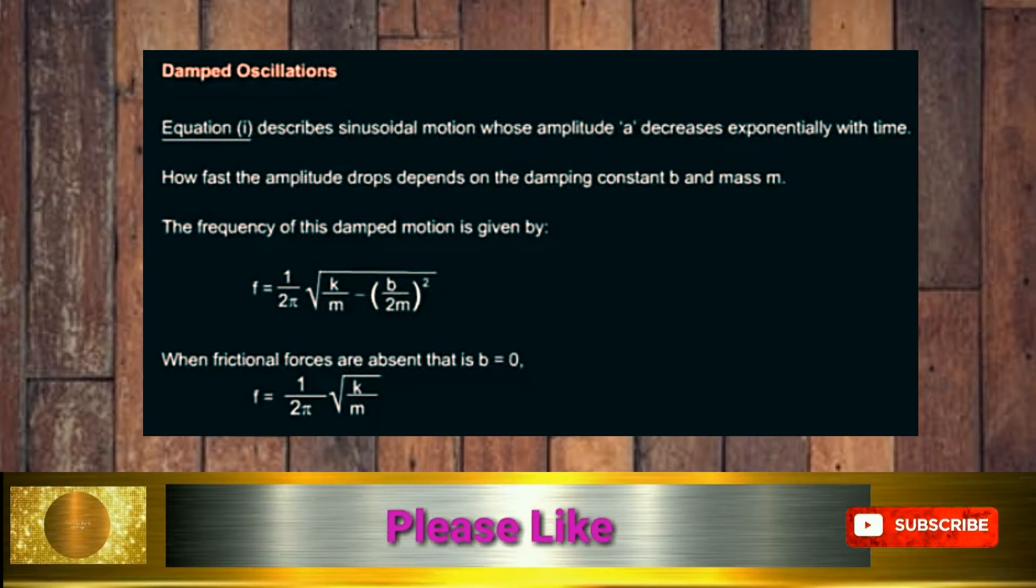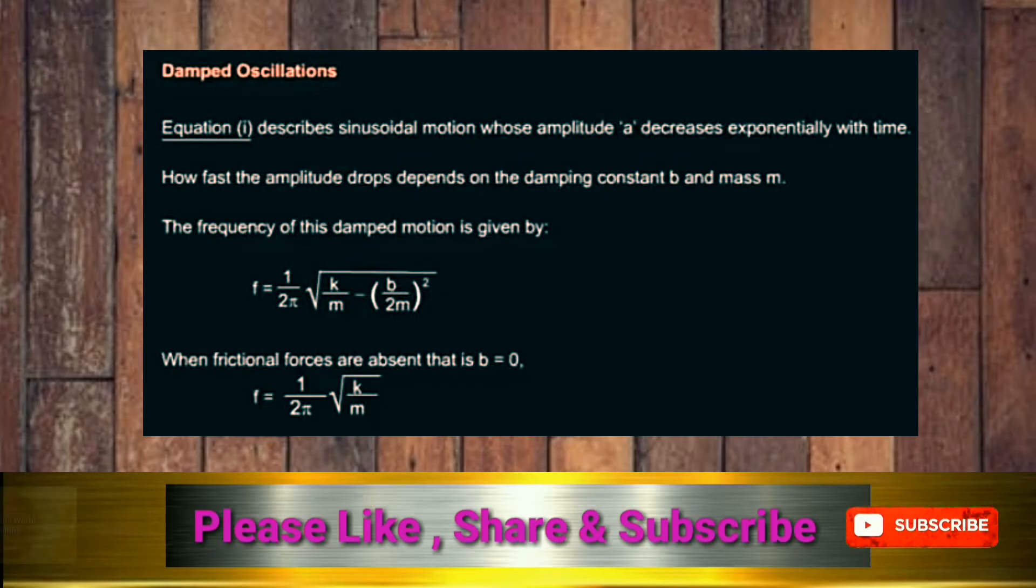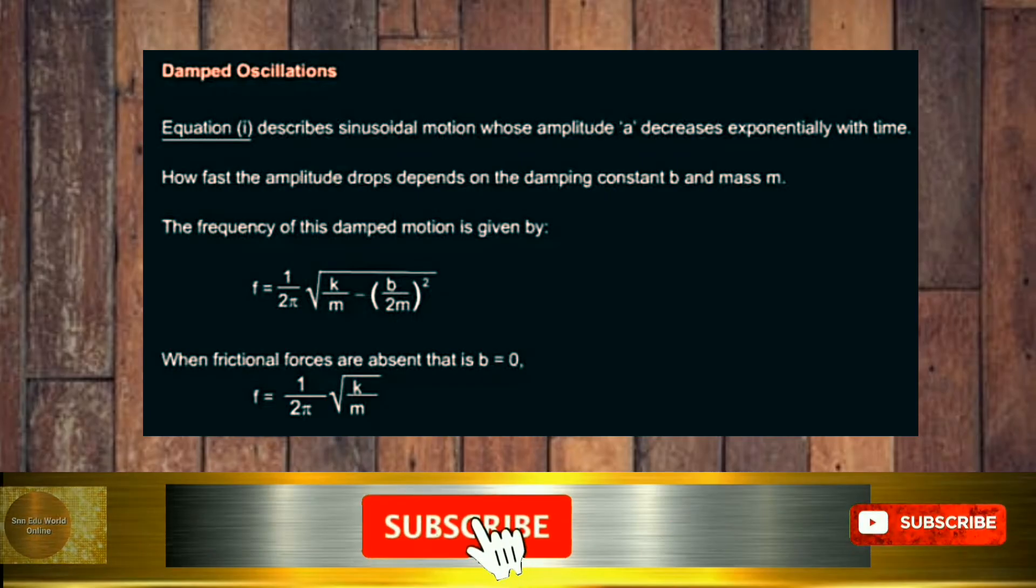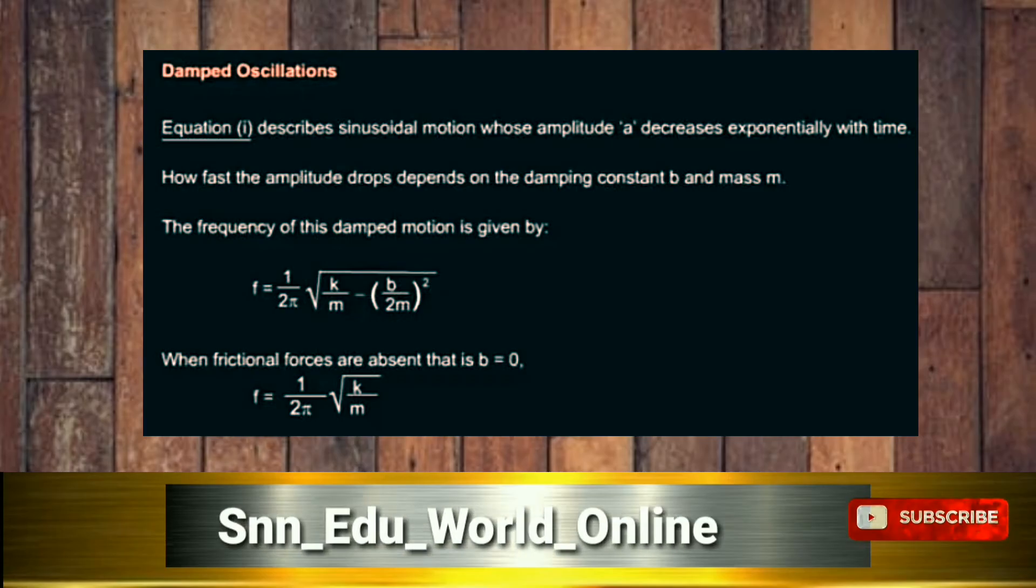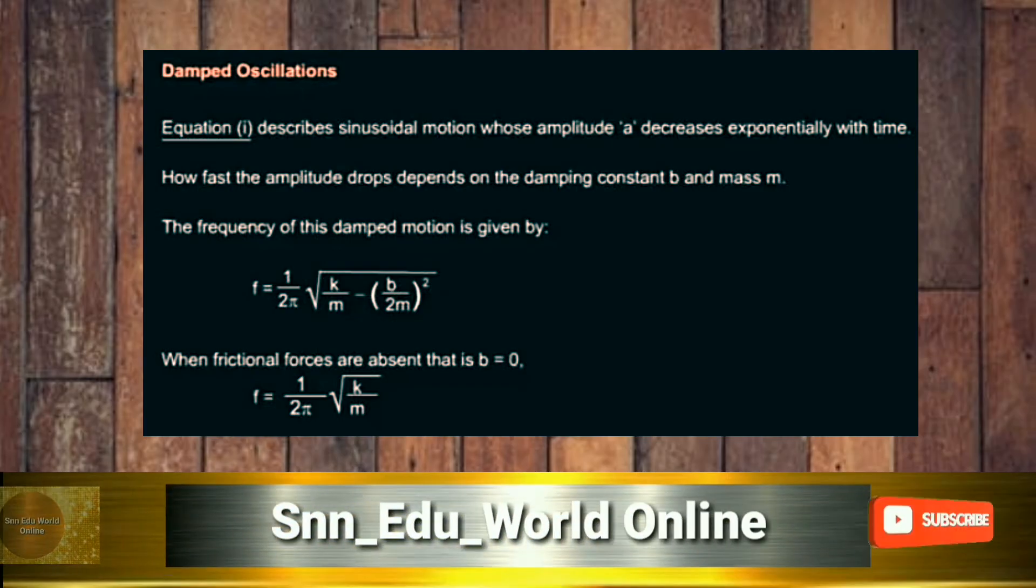When frictional forces are absent, that is b = 0, the frequency can be written as f = (1/2π)√(k/m) only.